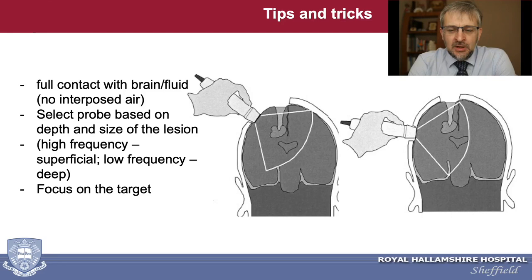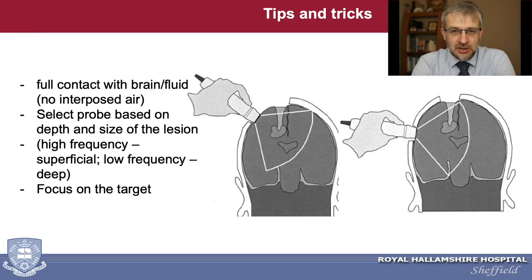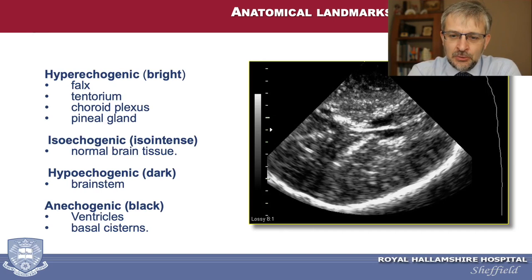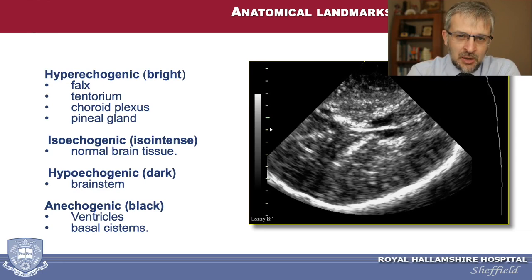Try to explore with the probe without applying pressure on neural structures. One of the commonest beginner's mistakes is to stick the probe in and expect to find the lesion straight away. Think of it like scrolling through MRI images — you should scroll across the surface with the probe, slide it, rotate it, tilt it until you get the best image. Try to recognize normal anatomy first: hyperechogenic structures, folds, choroid plexus, and ventricles are typically hyperechogenic.